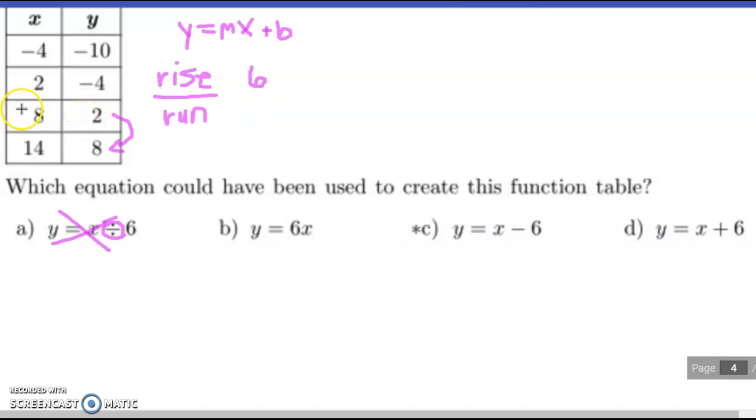Notice I'm also on my x, which is my run, going from 8 to 14. So how much did that increase? Well, from 8 to 14, it's also 6. So guess what that means? 6 divided by 6 is 1, so my rate of change is 1.